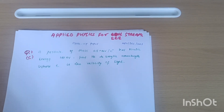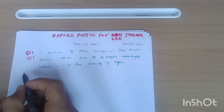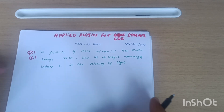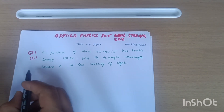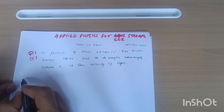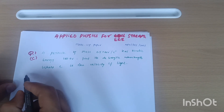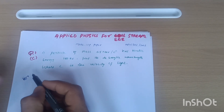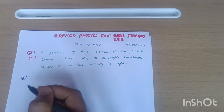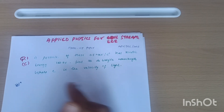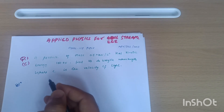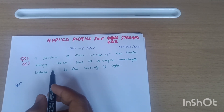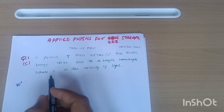Physics can be passed by theory only, but if you leave the numericals it may be the biggest mistake for students. These are very simple numericals — only formula based. You should only remember the formulas, or you may have a handbook in the examination. The rest of the things you know very well, so let me solve this particular question.